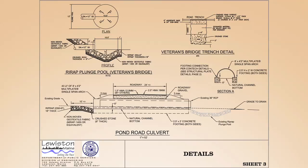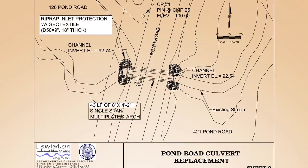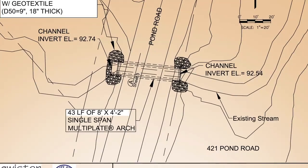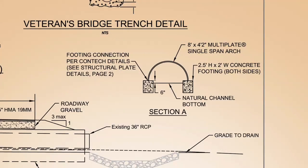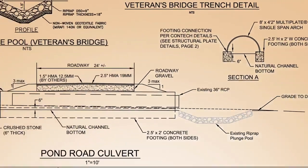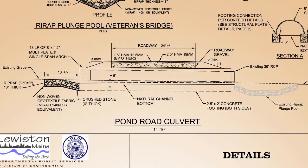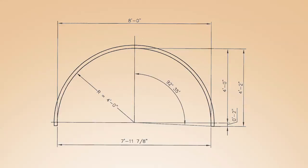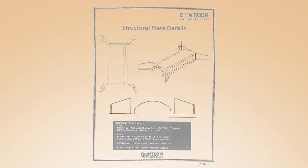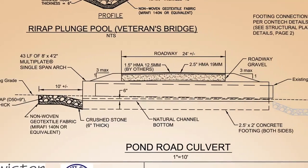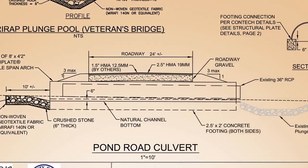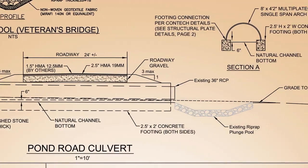Before construction starts, a design needs to be completed that shows enough detail so the culvert can be installed properly. For a culvert, the key components are the location of the culvert, the bottom elevations of the footings, and the design channel elevation through the culvert, along with specific details such as dimensions and other structural requirements. The plan view from the construction drawings shows the location of the culvert and elevations of the channel.